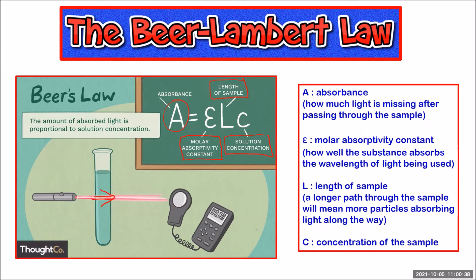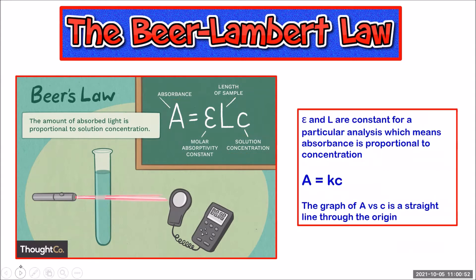The molar absorptivity constant and the sample length are kept constant for a particular analysis, and that means that we can actually just wrap them up into one constant. And that leaves us with an equation: absorbance is equal to some constant multiplied by the concentration. That's a proportional relationship, which means if you graph absorbance versus concentration, you end up with a straight line through the origin.